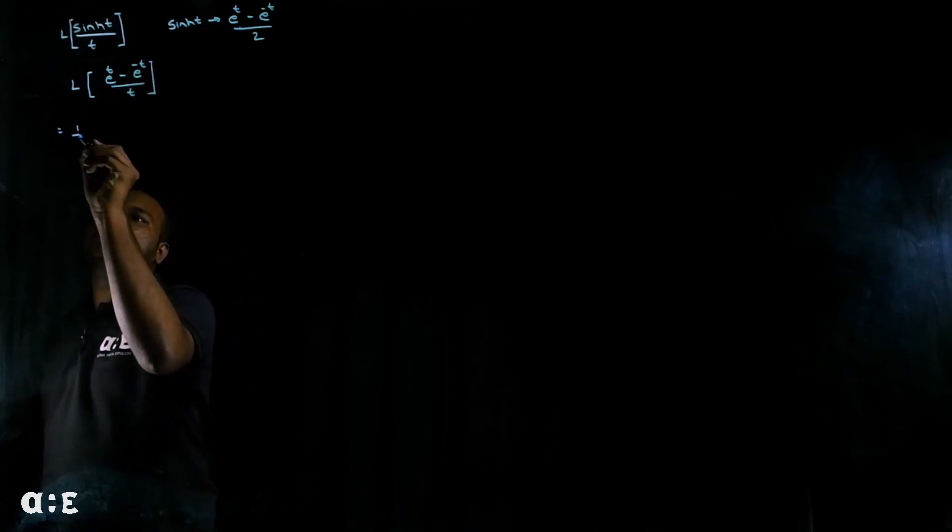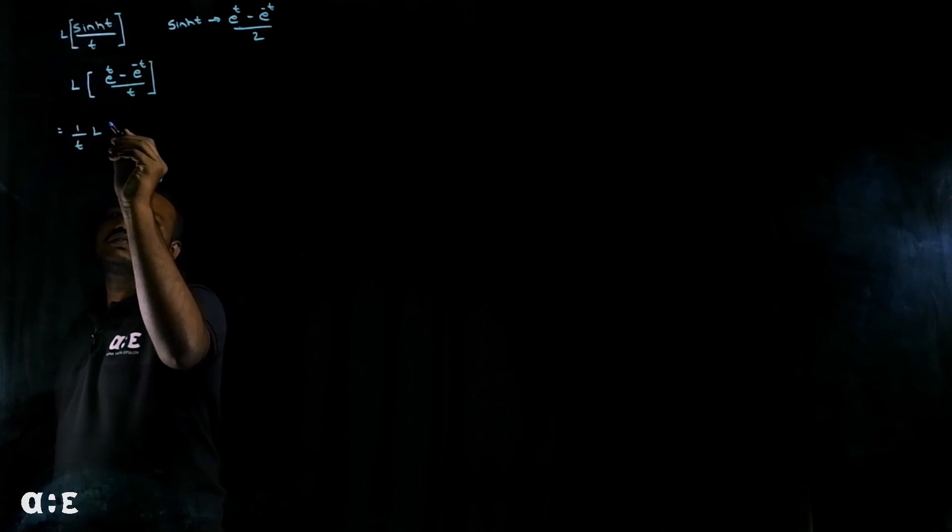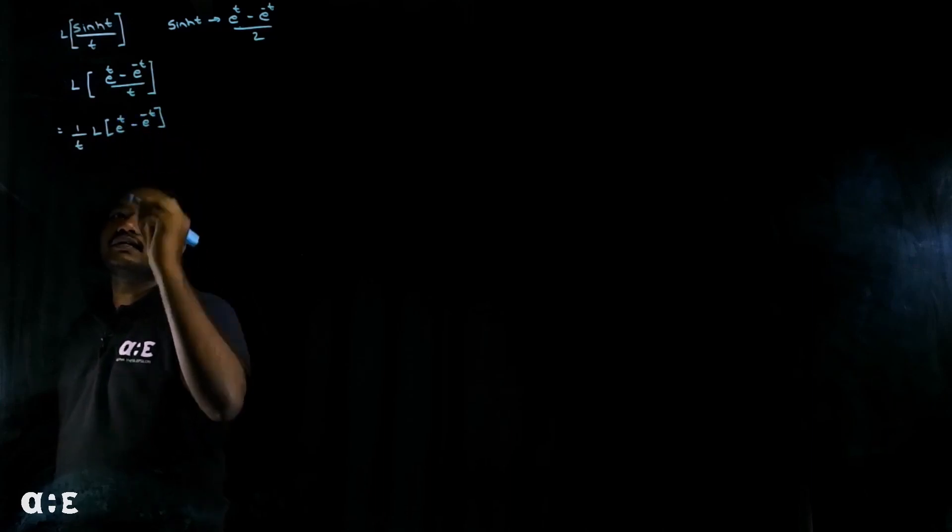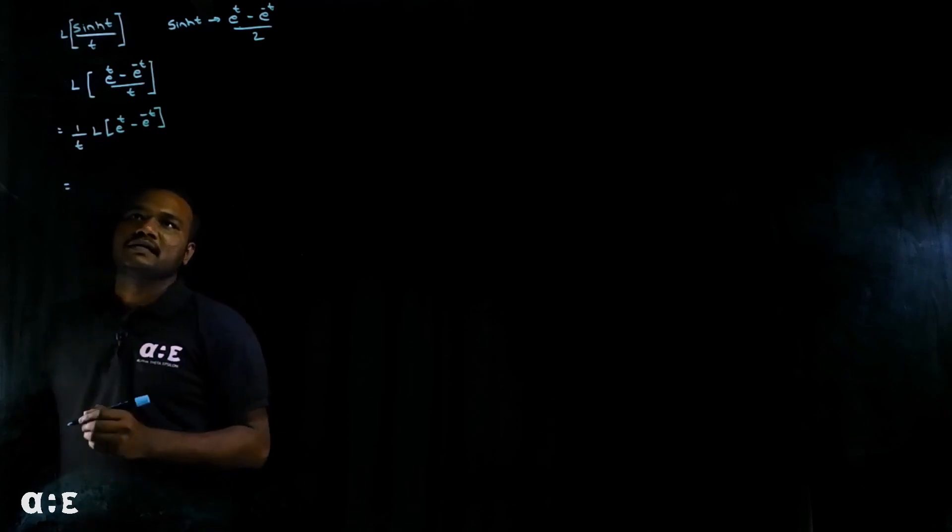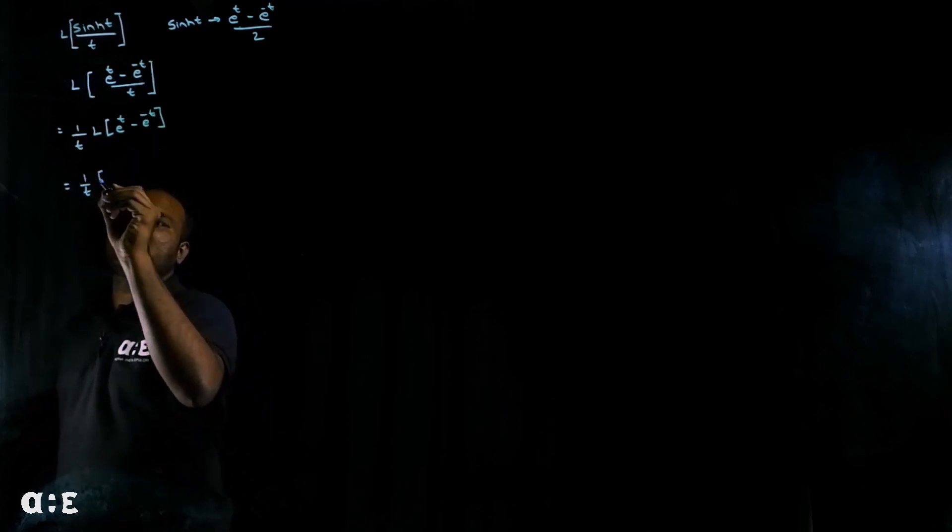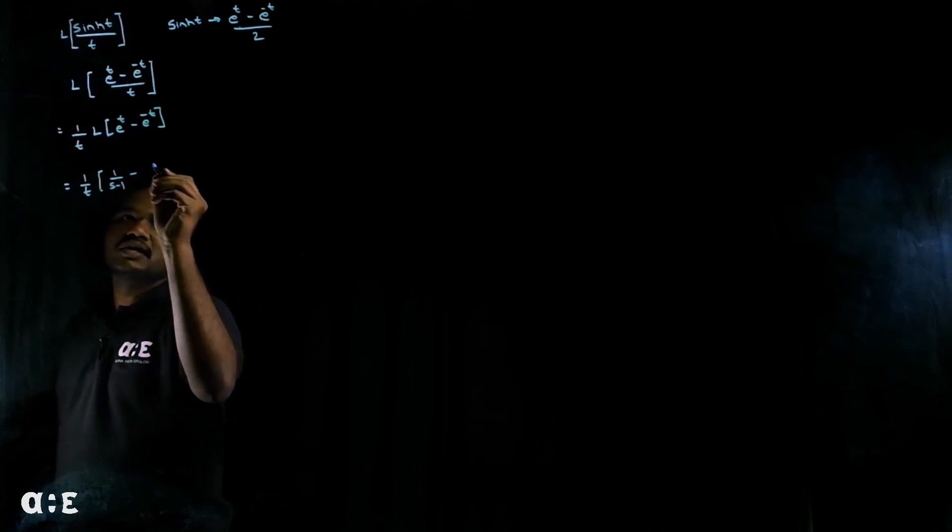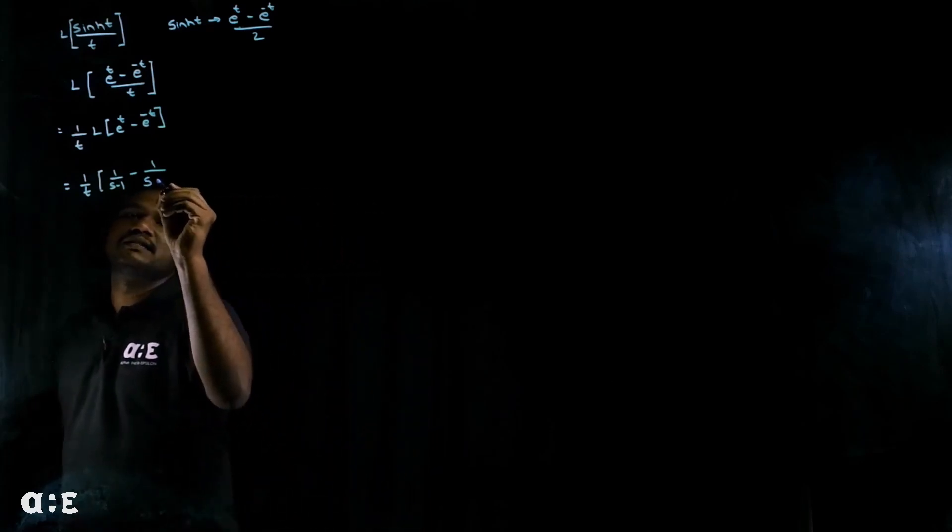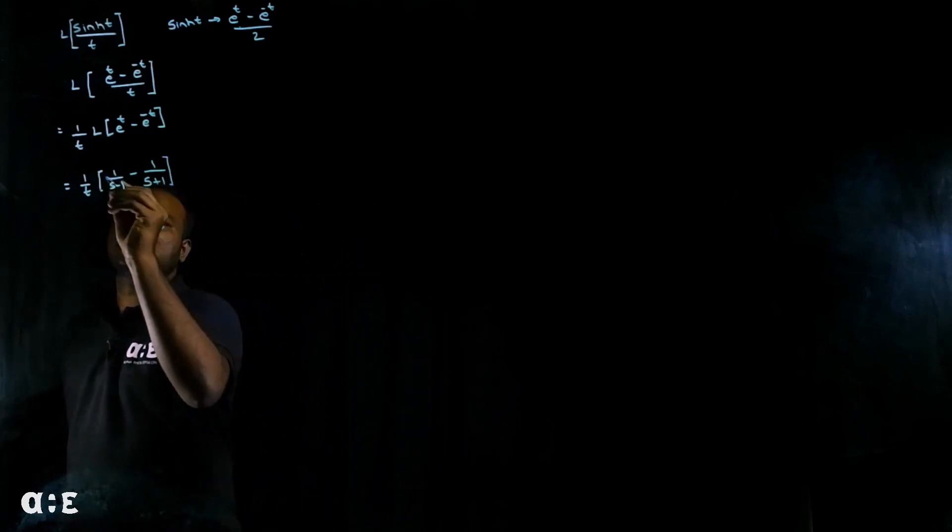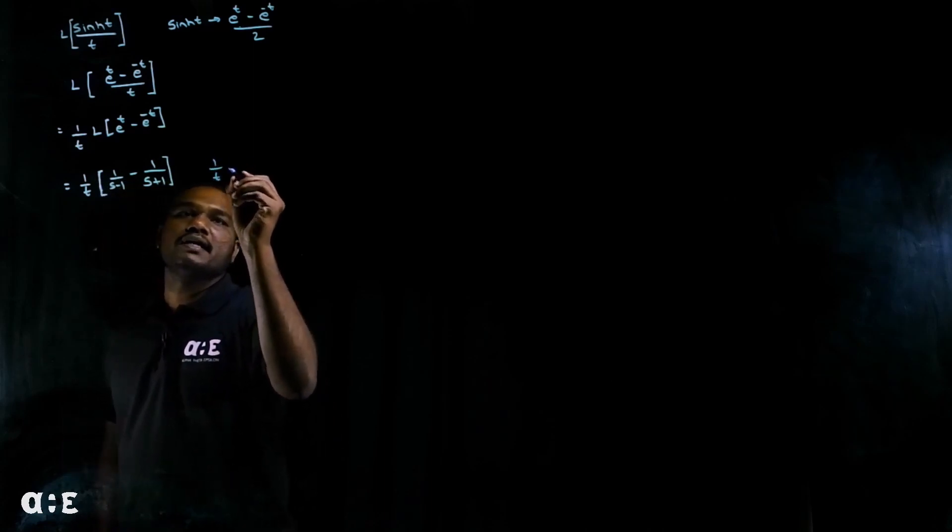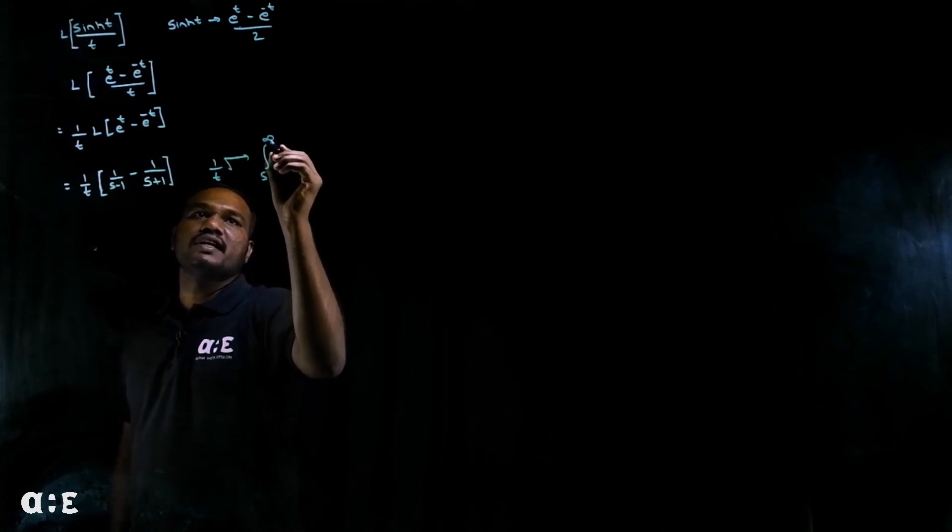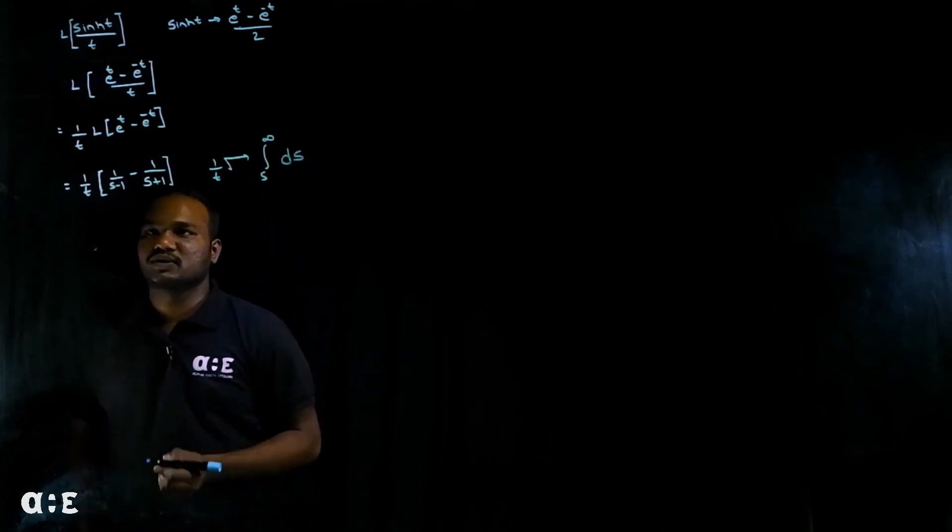So we have Laplace of e power t minus e power minus t over 2. Let's take one by t outside. We will have one half with Laplace of e power t minus e power minus t. Then how to solve for this? We know Laplace of e power t, that is one over s minus one, minus Laplace of e power minus t, that is one over s plus one. Now we need to replace one by t with integration from s to infinity with respect to ds.